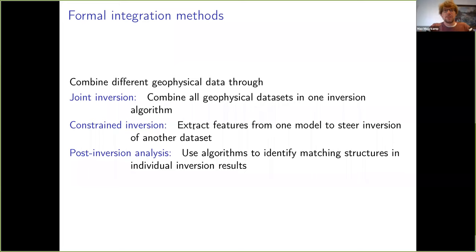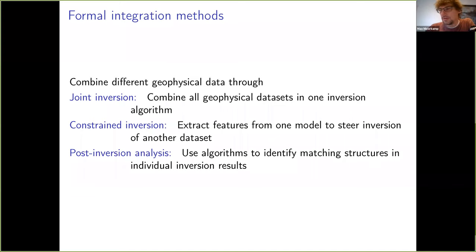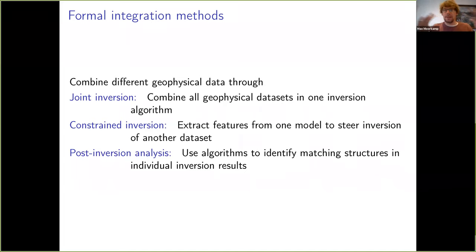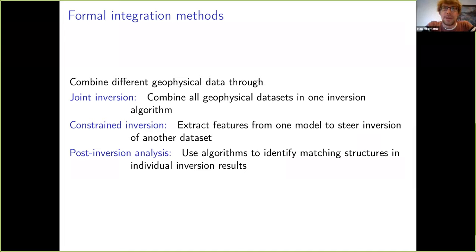When we want to integrate different data, we have a variety of geophysical data sets and various methods to combine these. Integration is a bit of a buzzword at the moment and very often it involves mostly comparing models and plotting them on top of each other. But we want to go a step further and use some formal integration methods. What I call joint inversion means that you have one big inversion algorithm, one computational program. You put all your geophysical data sets in their rawest form in there, the inversion algorithm does something, and then at the end you get out a model or a set of models designed to explain all the data simultaneously.